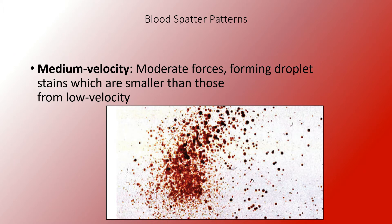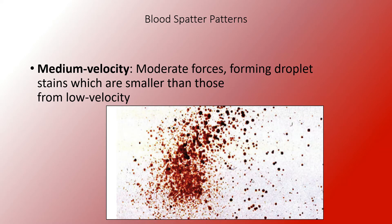Medium velocity is created by moderate forces — anything from someone striking someone else with a weapon such as a bat or even your own fists, all the way up to a gunshot wound somewhere other than the head or farther away. You don't always get high velocity from guns, but you can. Medium velocity could also result from a car crash at higher speed. Either way, these moderate forces are going to create smaller droplets that are less circular and more likely to be elliptical or oval-shaped.